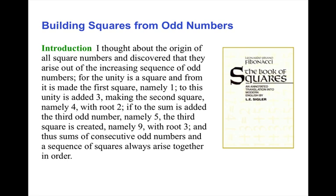If to this sum is added the third odd number, namely five, the third square is created, namely nine, with root three, and thus sums of consecutive odd numbers and a sequence of squares always arise together in order.